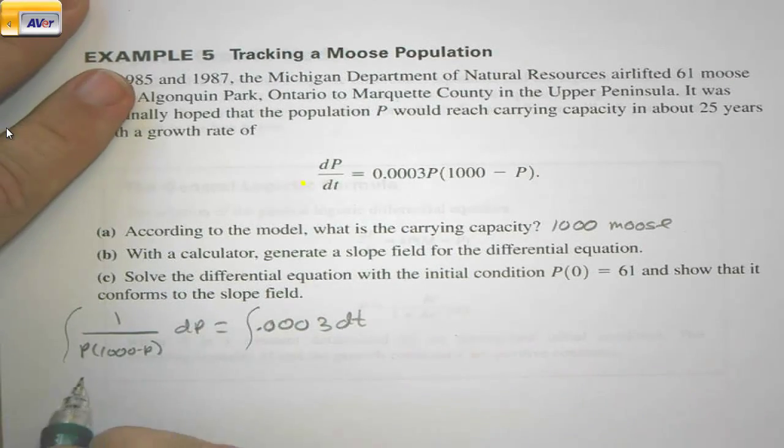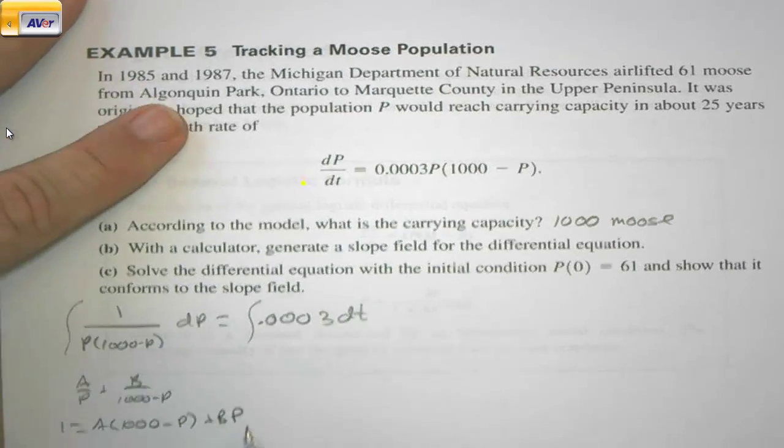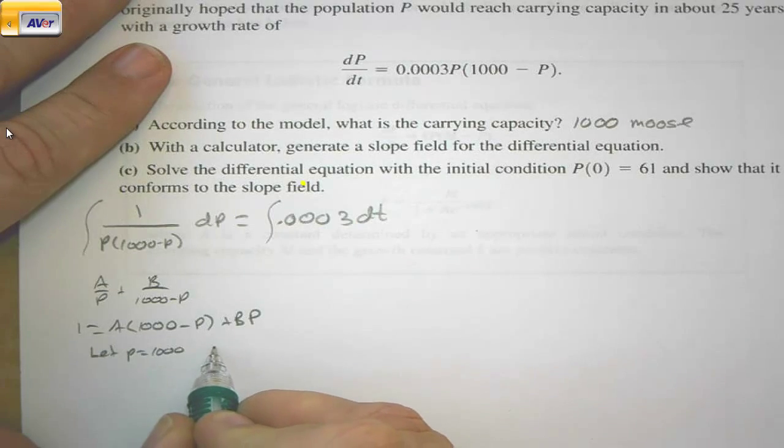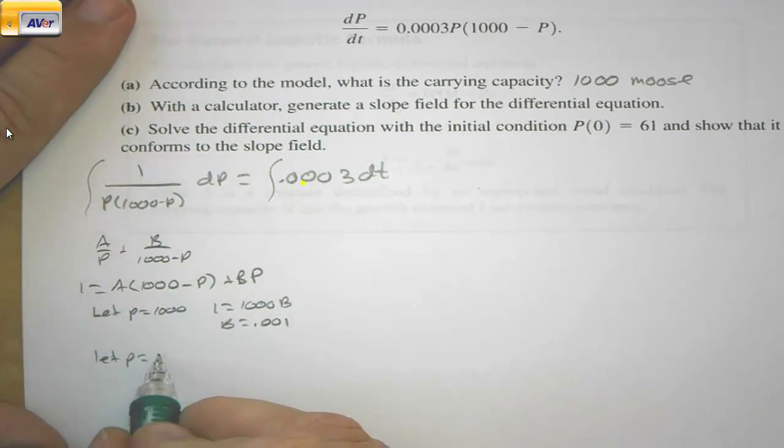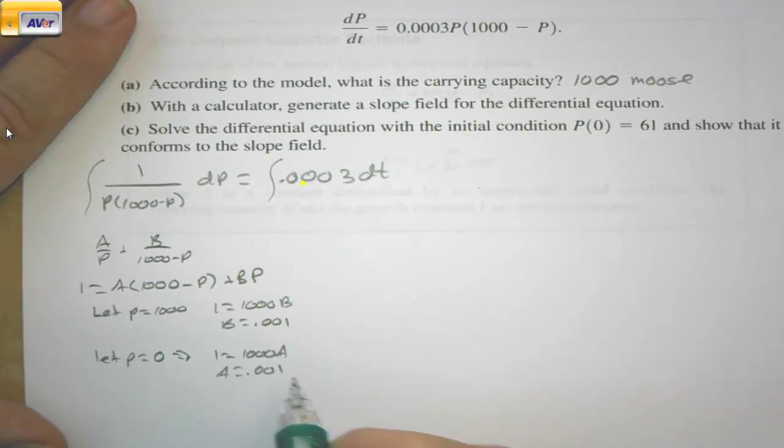We have A/P + B/(1000 - P). So 1 = A(1000 - P) + BP. So if we let P equal 1000, then we'll have 1 = 1000B. So B = 0.001. Then if we let P equal 0, what you get is 1 = 1000A. So A is 0.001 as well.